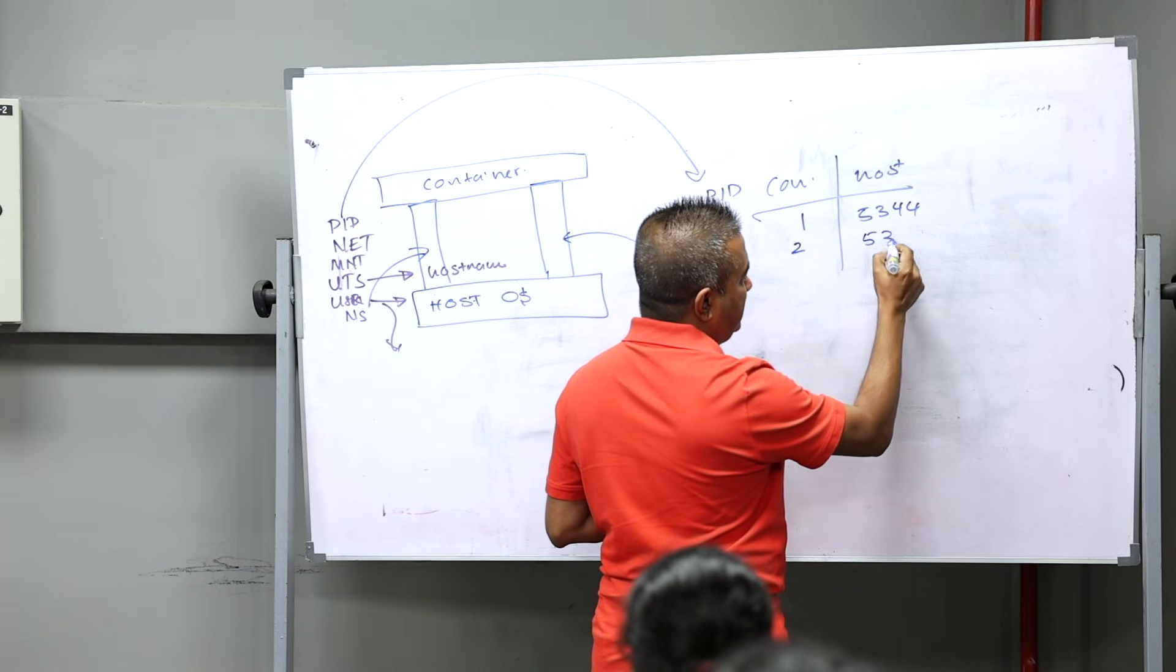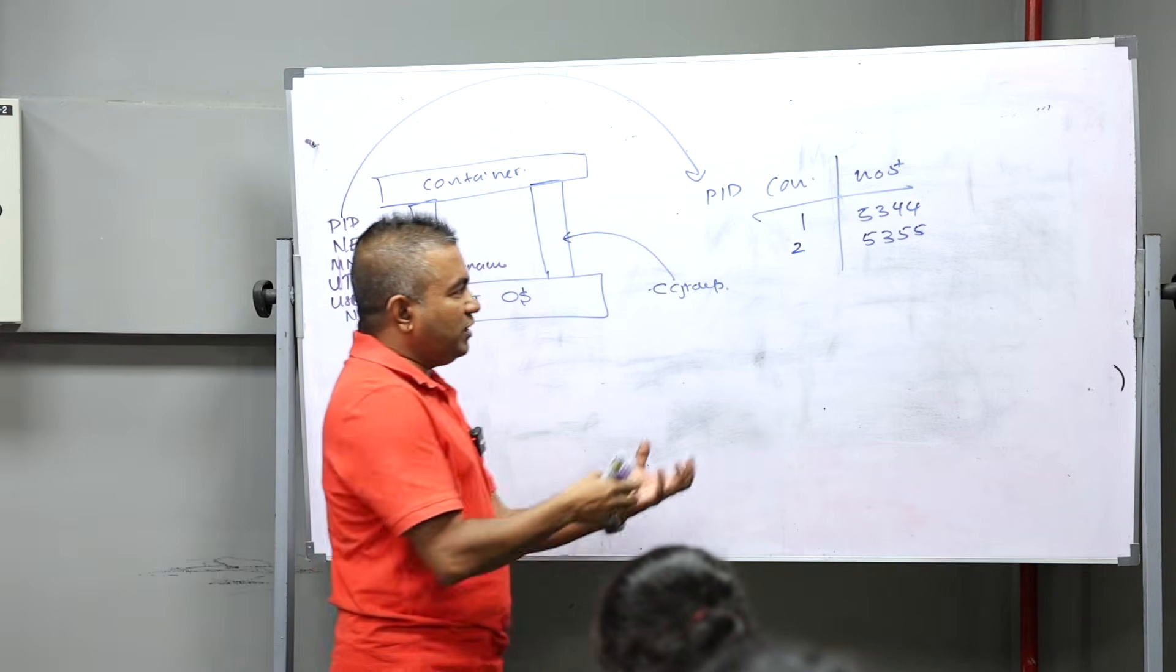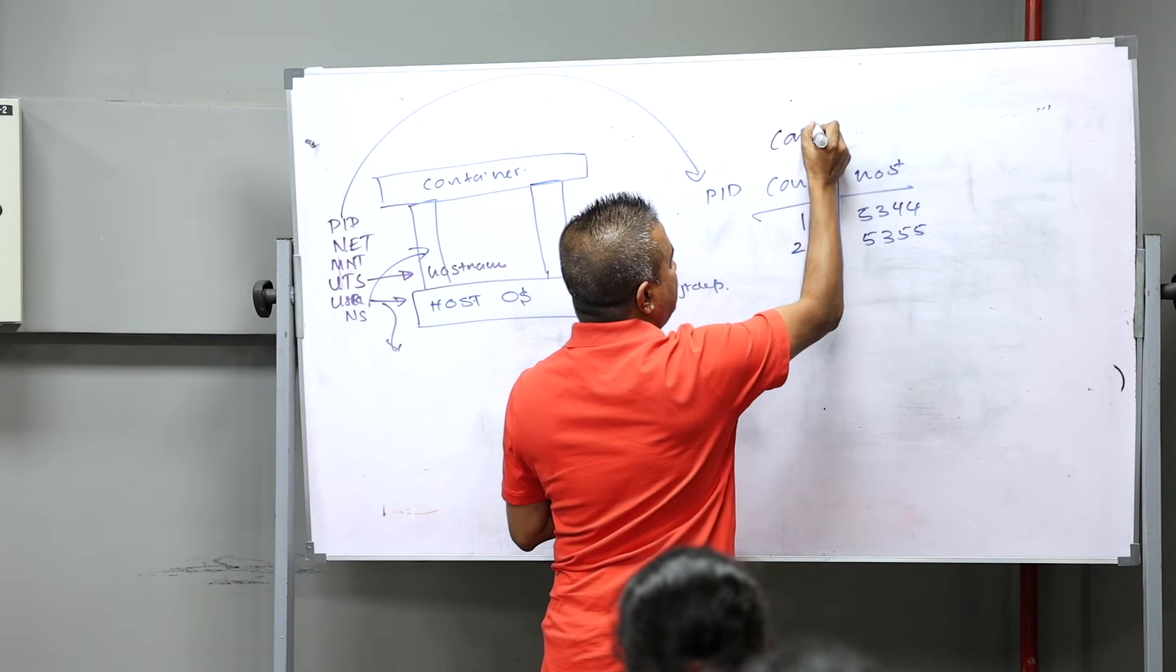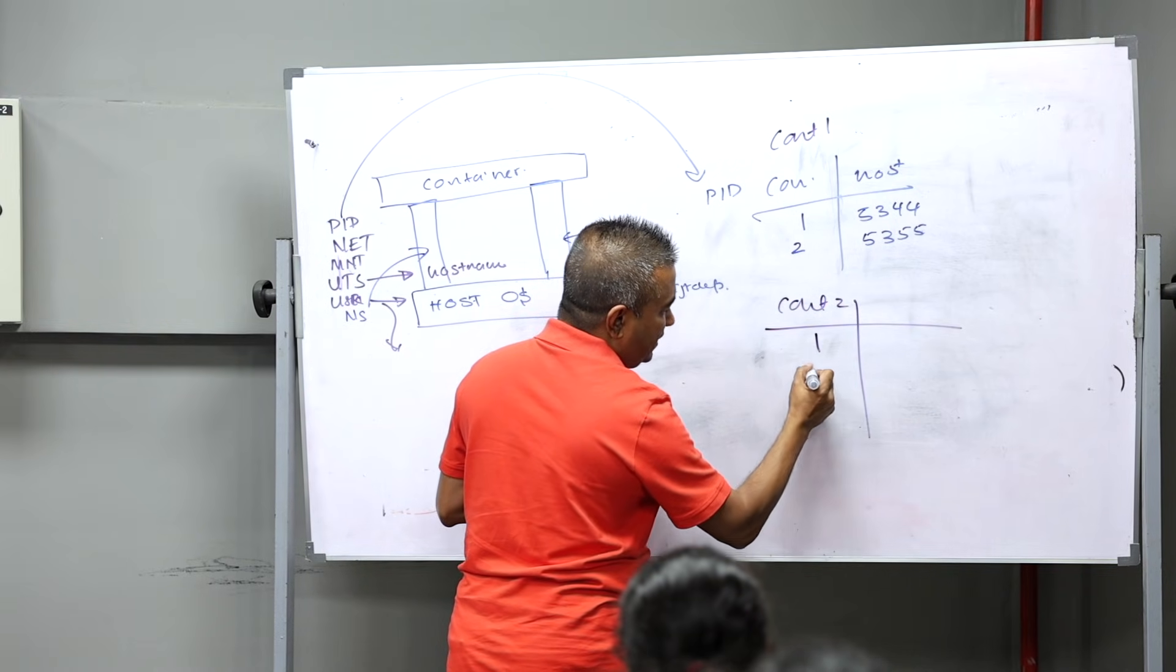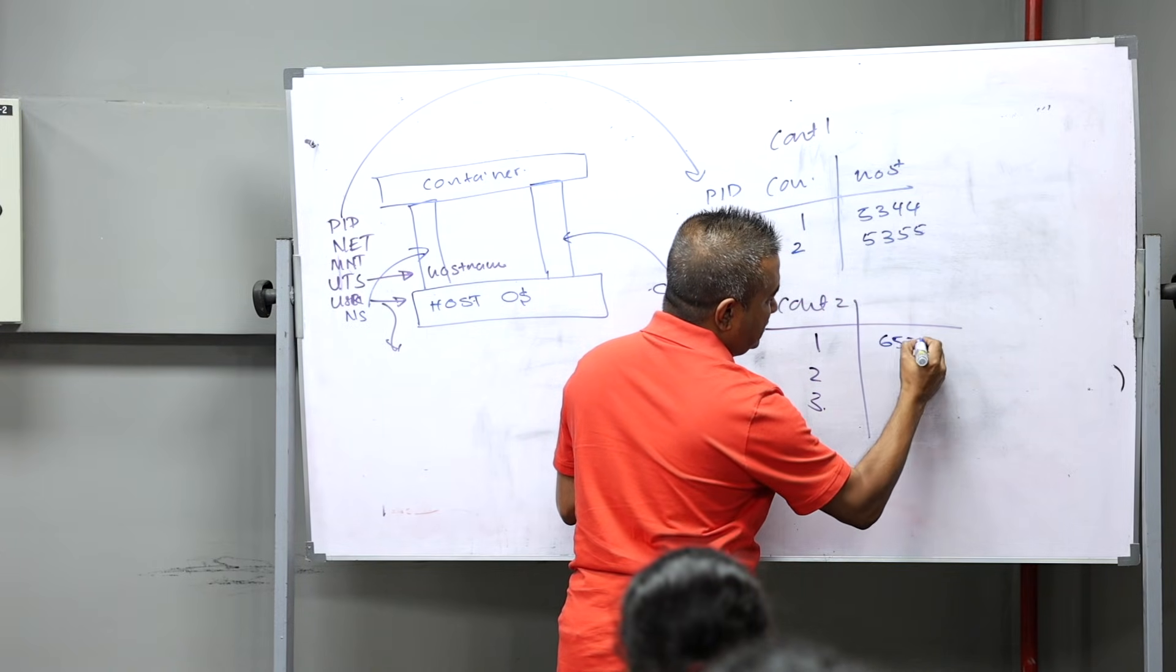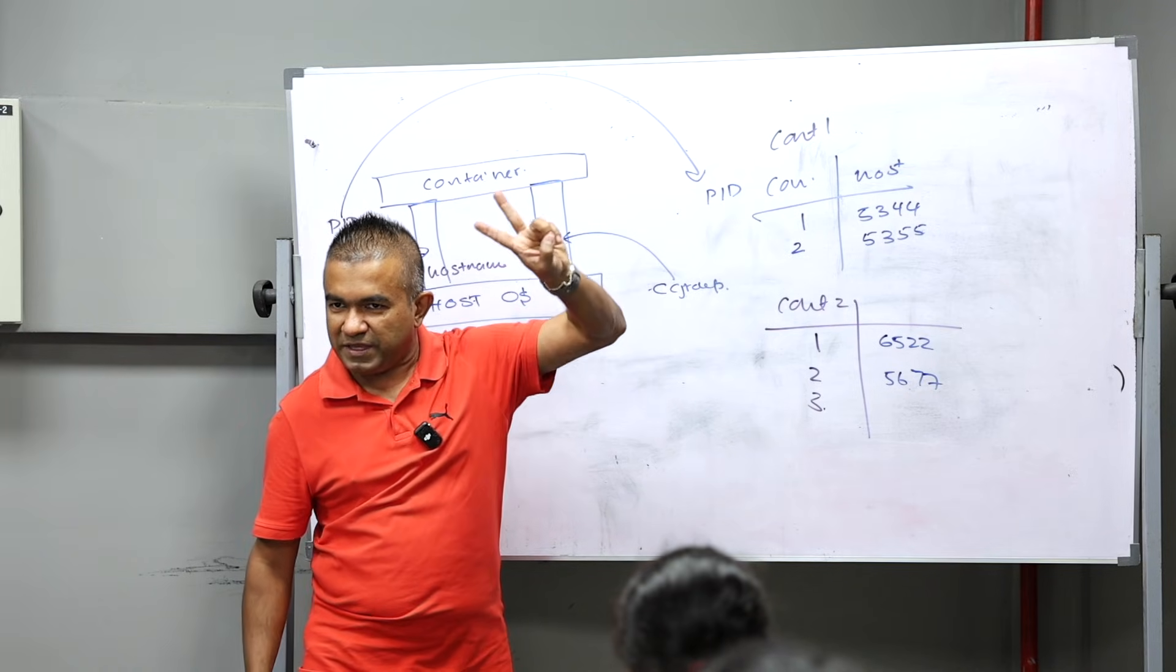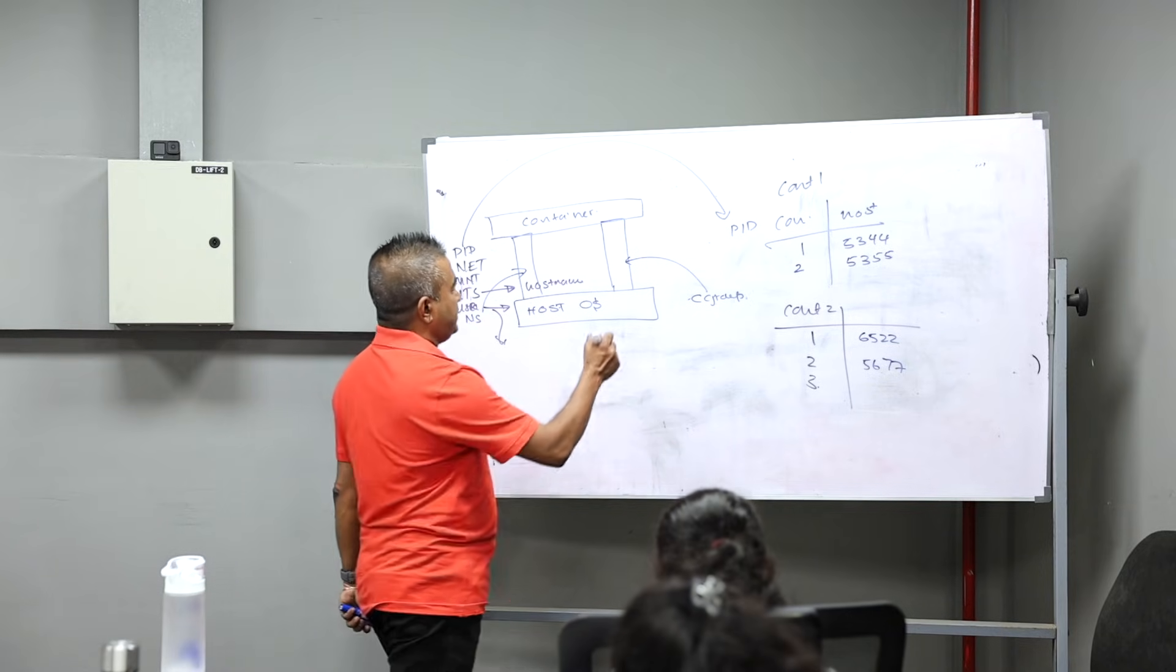You only see your PIDs. Now let's say two containers run. This is container 1, this is container 2. This has PID 1, 2, and 3. This may be 6552, 5667 something like that. So now this container sees 2 PIDs, this is 2 PIDs. The host sees all 4 PIDs.